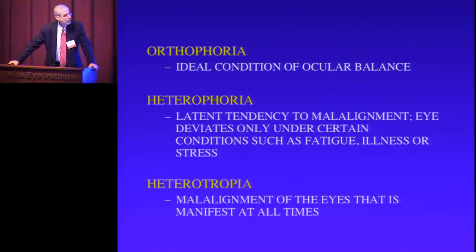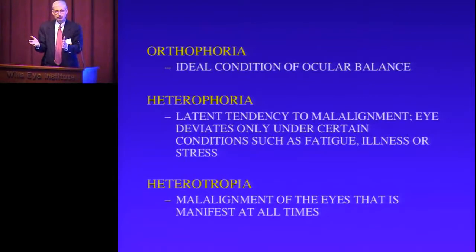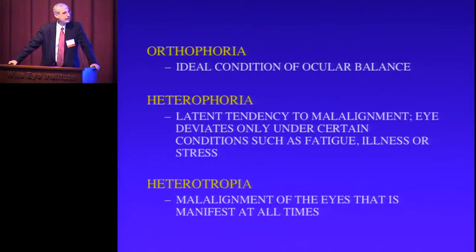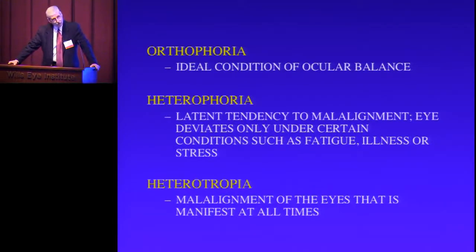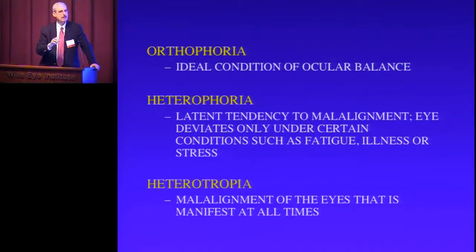Orthophoria is the condition in which the eyes are straight. A heterophoria is a deviation of the eyes which occurs only under certain circumstances — fatigue, stress, illness, et cetera. And then a heterotropia is a manifest deviation, a deviation which is present most of the time.